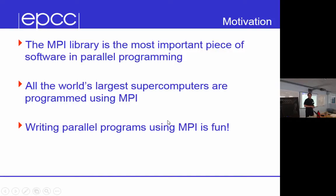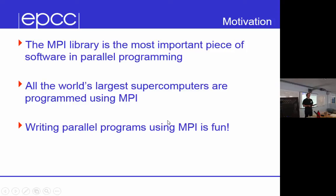I think writing parallel programs in MPI is fun. Depending on how your brain works, it is a surprisingly difficult, different programming model from serial programming. Some things are very easy to do in parallel in MPI. Some things which are quite trivial — like, I find an error and I want my program to stop — are actually quite subtle in MPI, in message-passing programming. And so it does make you think a bit.